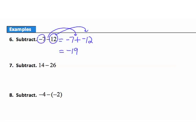Example 7: subtract 26 from 14. First number stays the same: 14. Subtraction becomes addition. Positive 26 becomes negative 26. Now adding opposites — more negatives or more positives? More negatives. How many more? 12 more negatives, so the answer is negative 12.